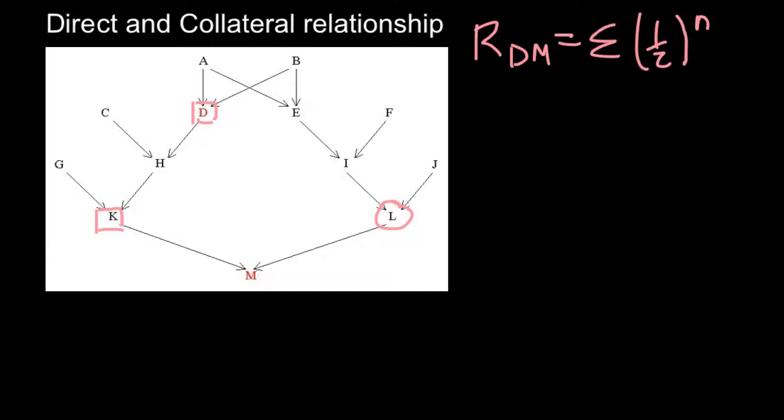So let's first calculate direct relationship. And this would be the shortest pass between individual D and M. So this is going to be our pass. So how many passes we have here? One, two, and three. And each time genetic makeup would be diluted by one half. So one half here, we can put one half here and one half here.